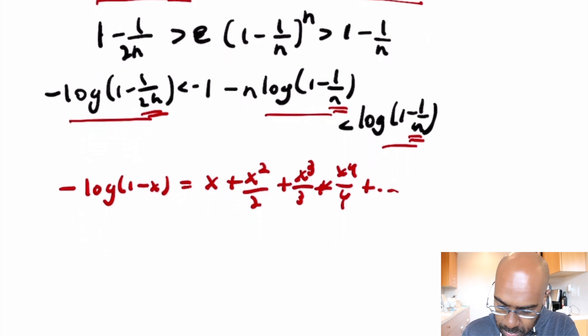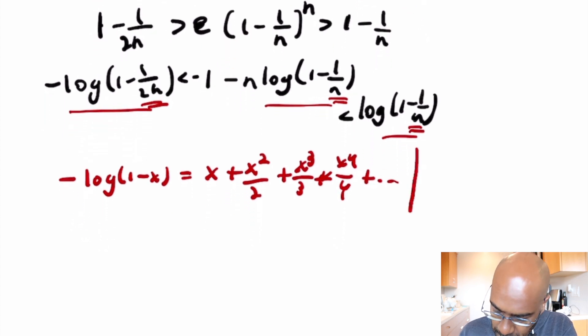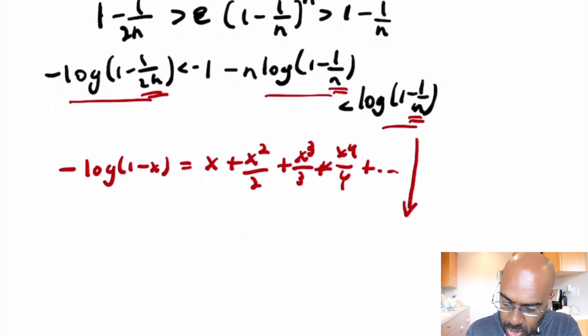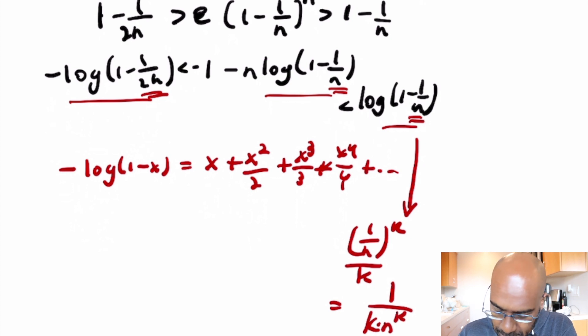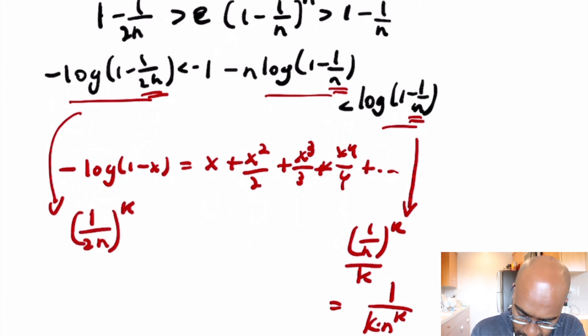Okay, so let's look at each of these particular expansions. Here, if we look at the contribution of the x to the k over k term, it's going to look like 1 over n to the k over k, which is 1 over k times n to the k. That's great. And then here we'll have a similar thing: we'll get 1 over 2n to the k over k, which is 1 over k times 2 to the k times n to the k.